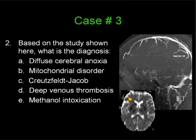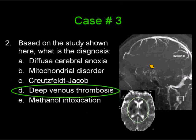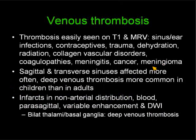Let's take a look at the answer. The majority of you said deep venous thrombosis, and it's pretty obvious from the MR venogram that the deep venous system is missing. You don't see the thalamostriate veins, the internal cerebral veins, the vein of Galen, the straight sinus, or the basal vein of Rosenthal. Those structures are the ones that drain the central aspect of the brain, illustrated on this ADC map, which shows restricted diffusion involving the basal ganglia and also the lateral aspect of the thalami. Venous thrombosis is well seen on T1-weighted images and on MR venograms.